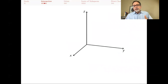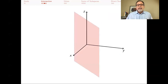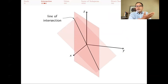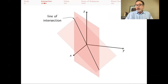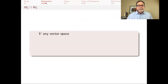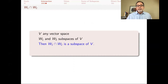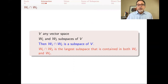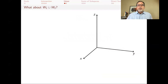Those were nice coordinate planes, but you could have any two different planes through the origin — they always intersect in a line through the origin, which is also a subspace. This is not a proof in general, but we proved in general that the intersection is always a subspace. So the general fact is: if V is a vector space and W1 and W2 are subspaces of V, then W1 intersection W2 is a subspace of V, and this is the largest subspace contained in both W1 and W2.